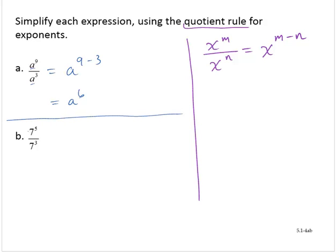Example b, we have 7 to the fifth divided by 7 to the third. Again, notice we have the same base of 7. So we will keep the base and we will subtract the exponents.